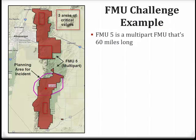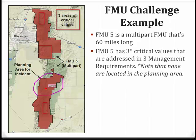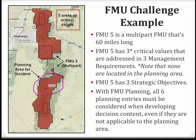In this example, FMU 5 is a multi-part FMU that contains an active incident in its southern half. The FMU contains three critical values that are addressed and three management requirements, indicated in red. Note that no critical values fall within the incident's planning area in purple. There are also three strategic objectives for FMU 5. Under FMU planning, all three management requirements and three strategic objectives listed in WFDIS for FMU 5 must be considered when developing a decision, even if the values or objectives are not applicable to the incident's planning area. This poses a challenge frequently encountered by fire managers, as the list of resources or values requiring consideration in a decision can be extensive.